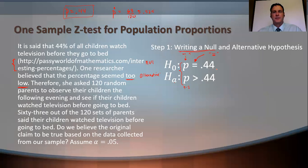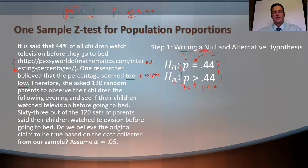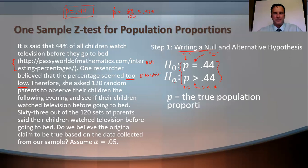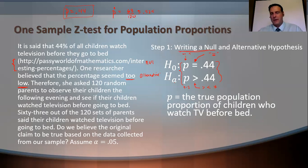We also need to define what P is in words. P is the true proportion of children who watch TV before bed. Make sure you use the word population, not sample, because these are population proportions. Also make sure it is written in present tense, not past tense.